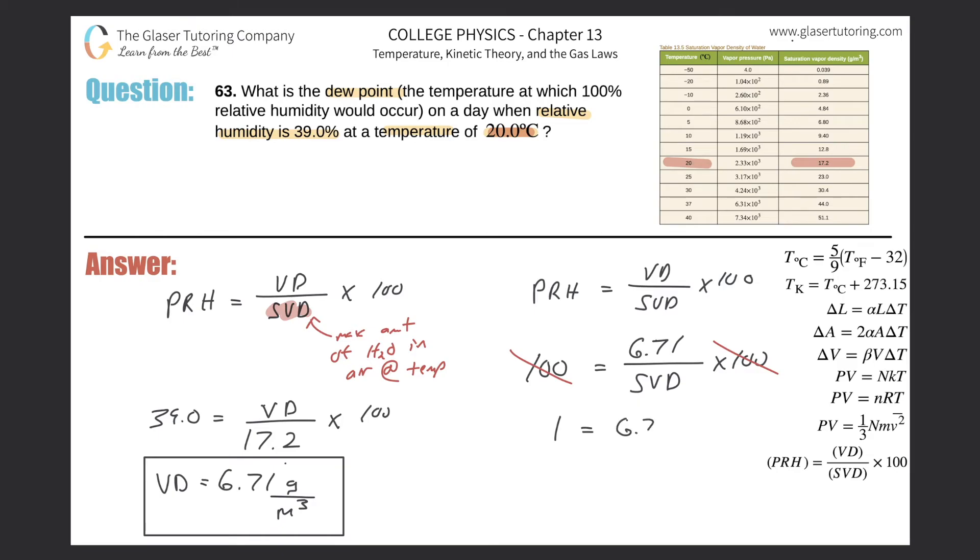I would just cross multiply this on up, so the saturation vapor density will equal 6.71 grams per cubic meter.